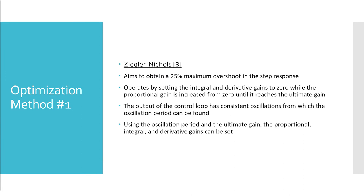The first optimization method used for determining the PID controller coefficients is the Ziegler-Nichols method. This method aims to obtain a 25% maximum overshoot in the step response. The Ziegler-Nichols method operates by setting the integral and derivative gains to zero, while the proportional gain is increased from zero until it reaches the ultimate gain. At this point, the output of the control loop has consistent oscillations from which the oscillation period is determined.